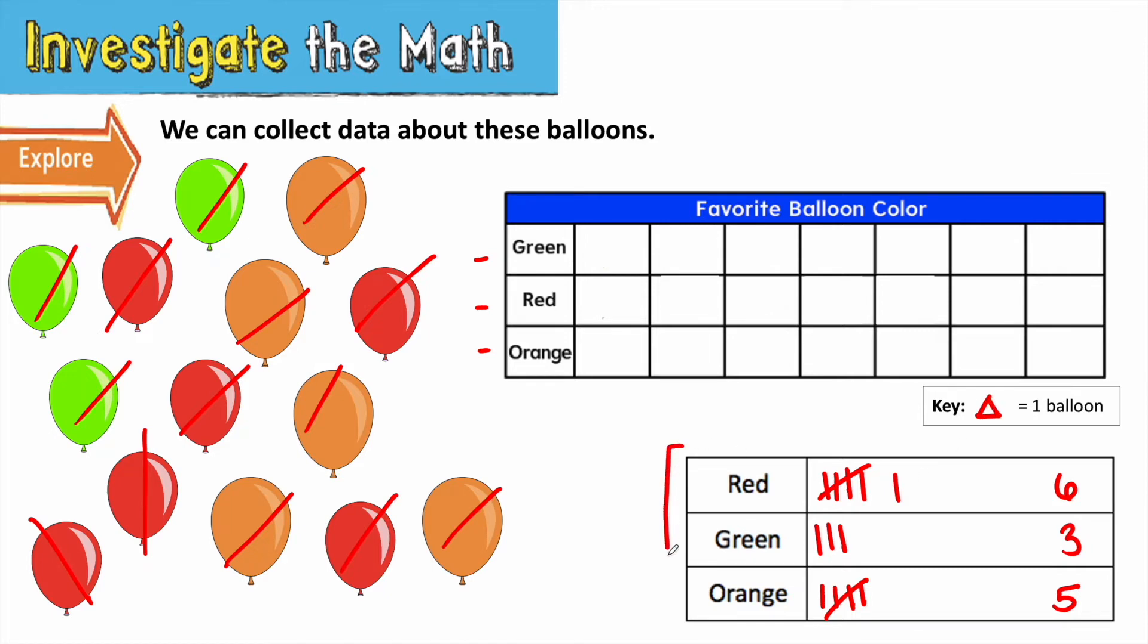So now I need to take my data that's in my tally chart and put it into my pictograph. I have to be careful to match each category up with each category. I see that these are in a different order. Here I see red first, but up here I see green first. So let me put my red balloons in my pictograph. I see that I have six red balloons. That means that I'm going to use six triangles to represent the six red balloons. Here's one red balloon, here's another red balloon, here's another red balloon. Notice that I'm putting one picture or symbol in each box. That way it's going to make my graph easy to read.